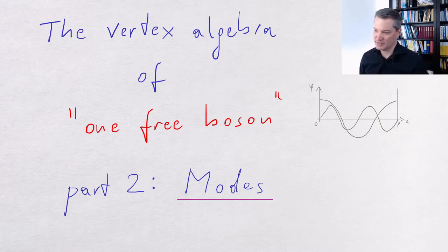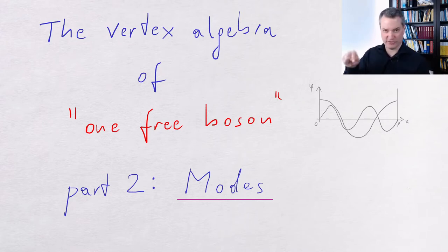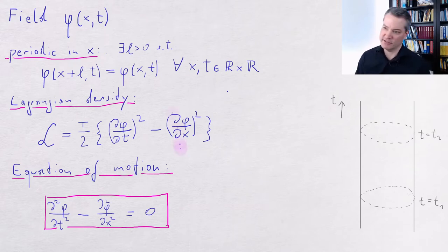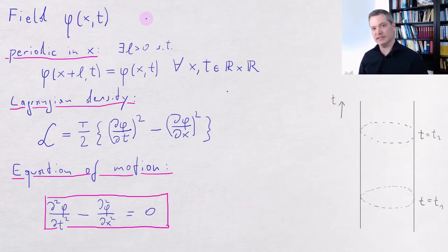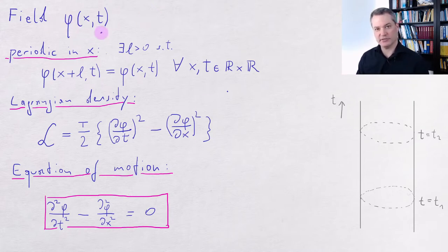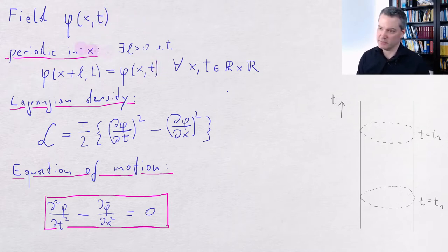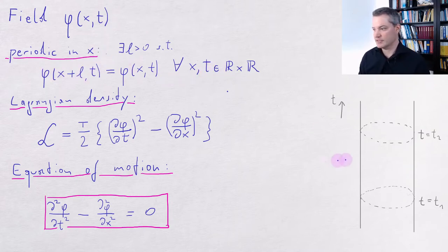Hello Internet! Welcome to the second part of our series on the free boson. I will put a link to the first part in the description below. Last time we defined the field phi, and we said that in the framework of classical physics you can think of phi as a real-valued function of space and time. We also demanded that our field be periodic in the space direction, which is equivalent to wrapping our space dimension into a compact circle.